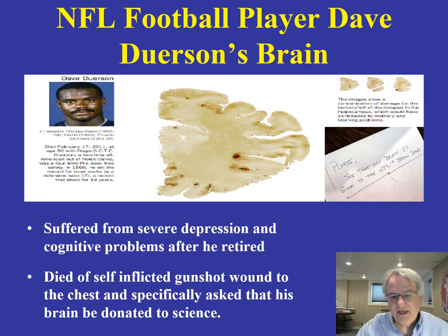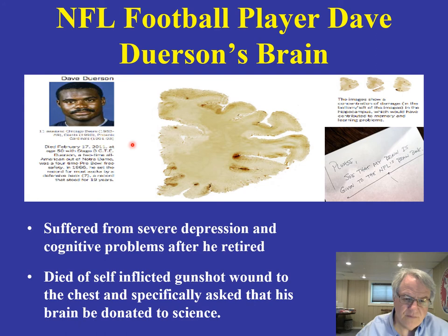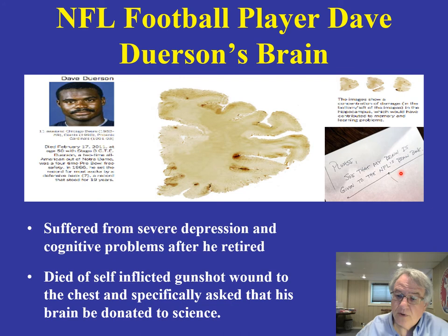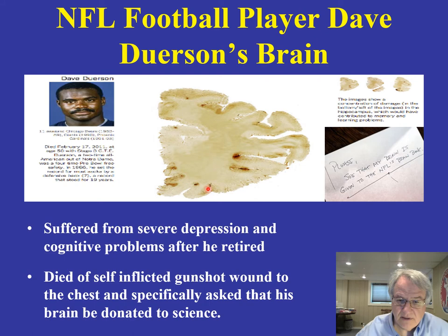When you take a look at some of these brains from football players, this is a particularly tragic case of Dave Duerson, who played for a number of years with the Chicago Bears and New York Giants. He underwent very severe depression and cognitive problems after he retired and took his own life. Before he did, he wrote asking that his brain be given to the National Football League Brain Bank. When that brain was examined, there was evidence of this abnormal tau protein throughout his brain.